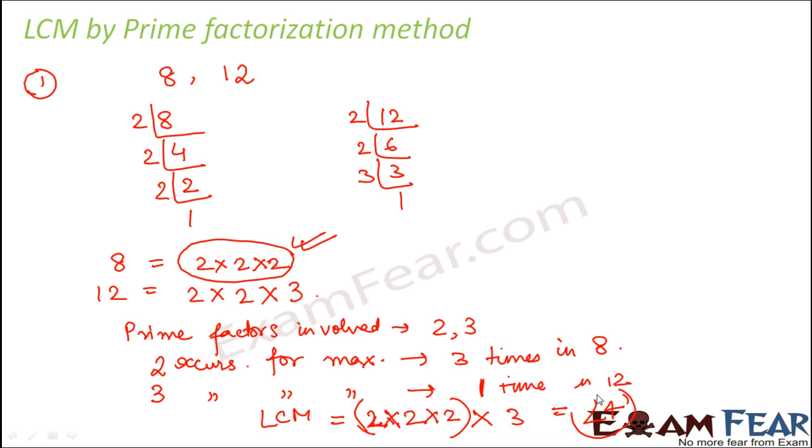So LCM of 8 and 12 would be 24. So basically what we do here is we do not look for common factors. Here we look for those factors which occur maximum number of times because we are looking for multiples here. We are not looking for factors. So we see how many times a particular, in which place or for which number a particular prime factor has occurred maximum number of times. So we pick it up there.